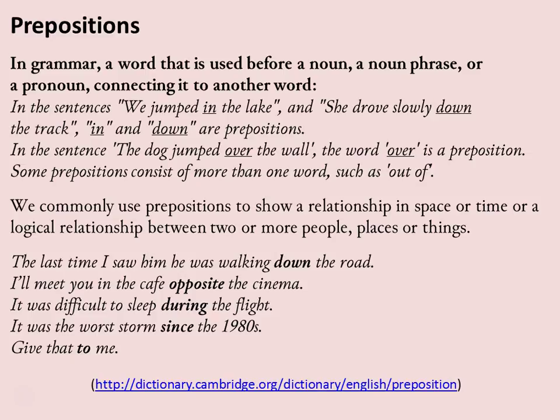From the Cambridge Dictionary, a preposition is a word used before a noun, noun phrase, or pronoun, connecting it to another word. Examples include: 'We jumped in the lake' — 'in' is a preposition; 'She drove slowly down the track' — 'down' is a preposition; 'The dog jumped over the wall' — 'over' is a preposition. Some prepositions consist of more than one word, such as 'out of,' and are commonly used to show a relationship in space, time, or between people, things, and places. For example: 'The last time I saw him he was walking down the road,' 'I'll meet you in the cafe opposite the cinema,' 'It was difficult to sleep during the flight,' 'It was the worst storm since the 1980s,' 'Give that to me.' All the highlighted words are examples of prepositions.